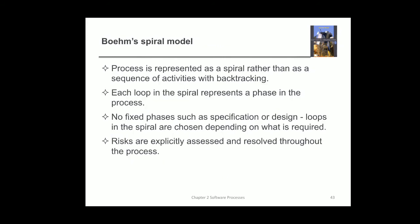That was about the incremental delivery model. Now we will see the Boehm spiral model. The process is represented as a spiral rather than as a sequence of activities with backtracking. Each loop in the spiral represents a phase in the process. There are no fixed phases such as specification, design, and implementation — loops in the spiral are chosen depending on what is required. Risks are explicitly assessed and resolved throughout the process.